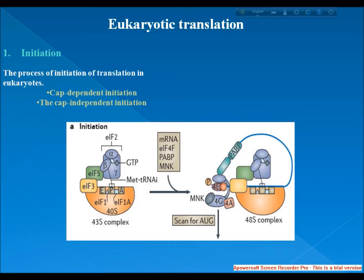The eukaryotic initiation factor 3, eIF3, is associated with the small ribosomal subunit and plays a role in keeping the large ribosomal subunit from prematurely binding. eIF3 also interacts with the eIF4F complex, which consists of three other initiation factors: eIF4A, eIF4E, and eIF4G.